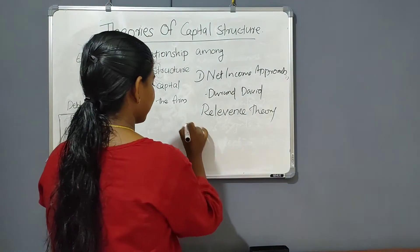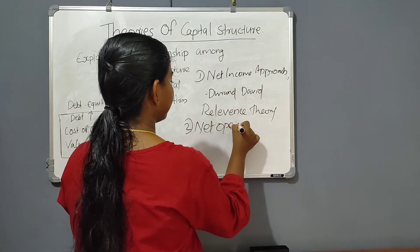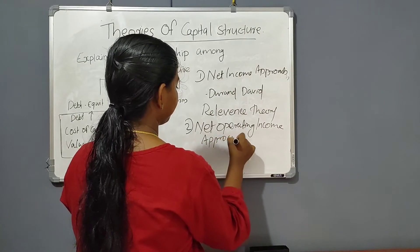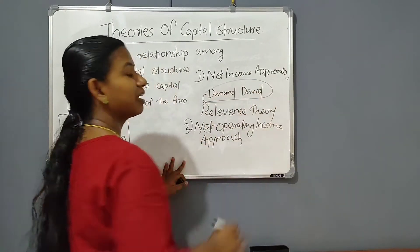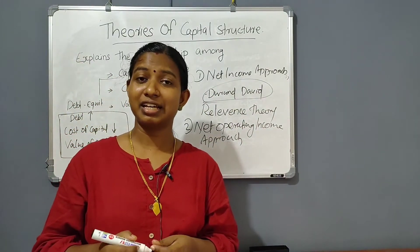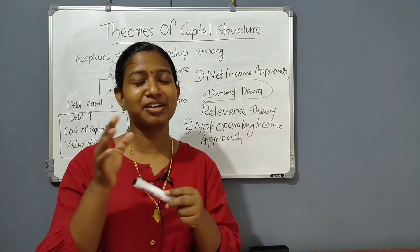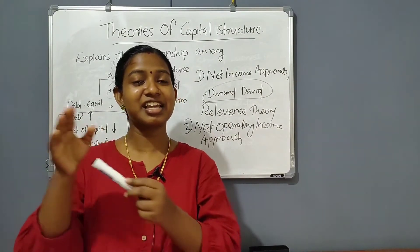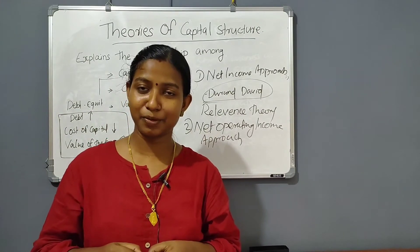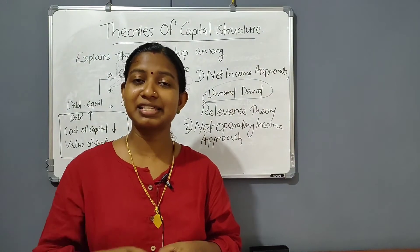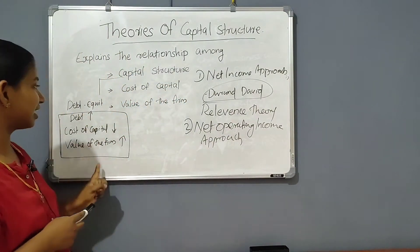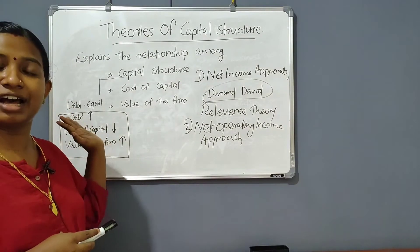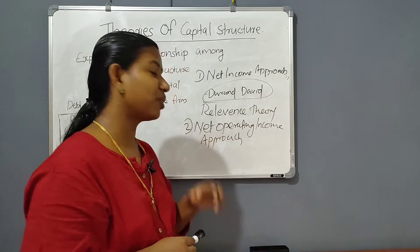The second theory is the Net Operating Income approach, also proposed by Durant David. Let's talk about the Net Operating Income approach. The Net Income approach and the Net Operating Income approach are opposite extremes. According to David, there is no relationship between debt content and the value of the firm.